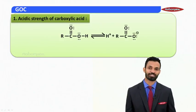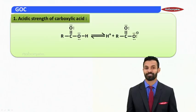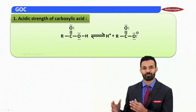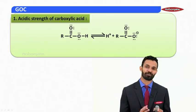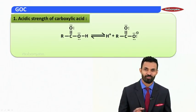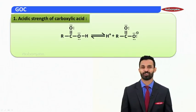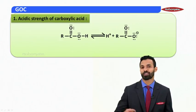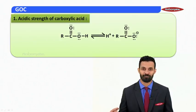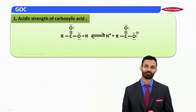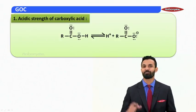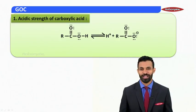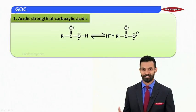The conjugate base is called the carboxylate ion. We now have two structures: carboxylic acid and carboxylate ion. We will draw the resonating structures of both, since both have a lone pair–alternate pi condition present, which makes a compound eligible to show the phenomena of resonance.